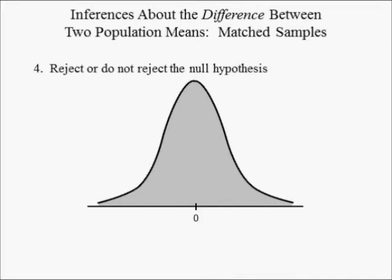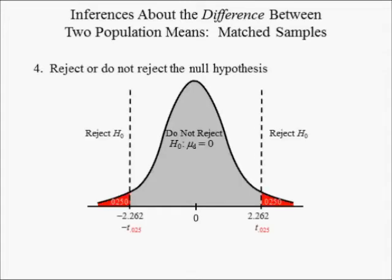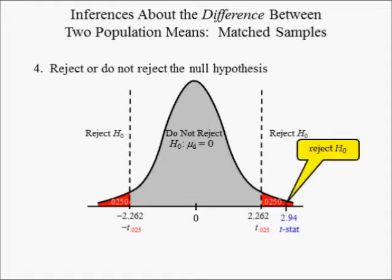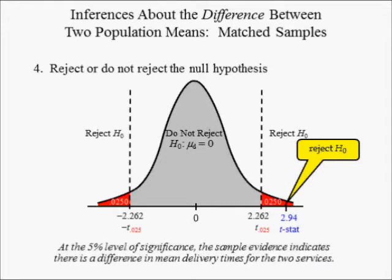In step 4, draw the distribution to help you reject or fail to reject the null hypothesis. The t-critical values are negative 2.262 and positive 2.262 because this is a two-tailed test. The probability of being in the tails is equal to 0.0250 plus 0.0250, which is the significance level. The critical values define the do-not-reject and reject-the-null regions. The null hypothesis is rejected because t-stat 2.94 is greater than the critical value 2.262. Hence, at the 5% level of significance, the sample evidence indicates there is a difference in mean delivery times for the two services.